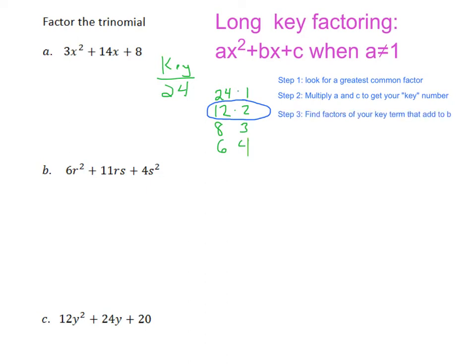Now this is where this process differentiates a little bit from the quick key method. Normally when we have the quick key method, we would just break this up into these two factors. But when you have a number in front of your x squared term that is not 1, we're going to have to do what's called factor by grouping.